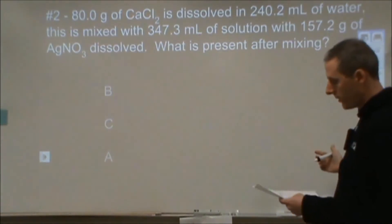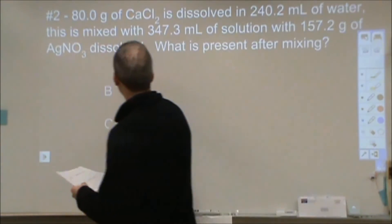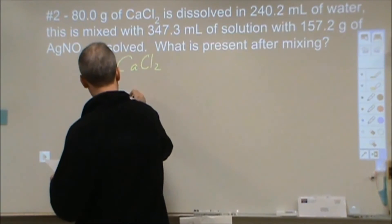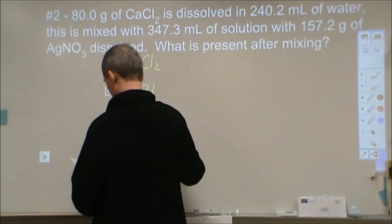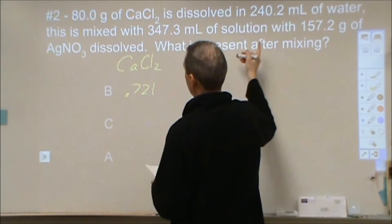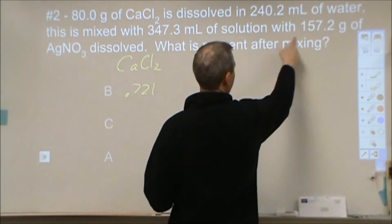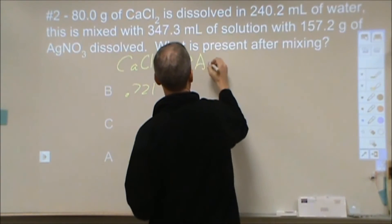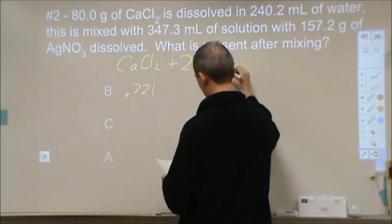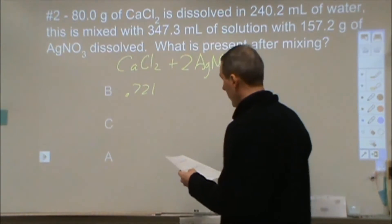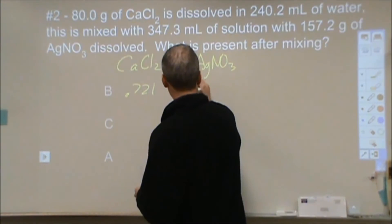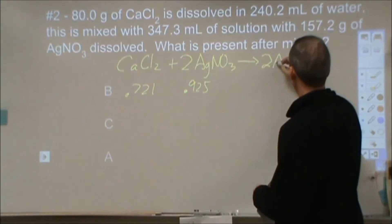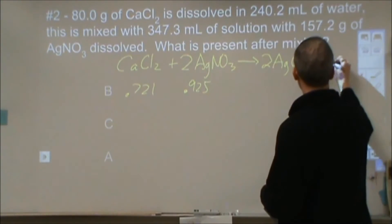Number two here, we have 80 grams of calcium chloride. That is CaCl2 and that is 0.721 moles. It's dissolved in water. We mix it with another water solution, 157.2 grams of silver nitrate. So we can change that to moles as well. That is 0.925 moles. Those are going to react. We're going to make two silver chlorides and a calcium nitrate.